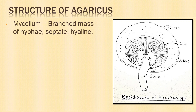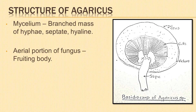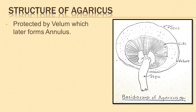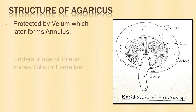The mycelium is a branched mass of hyphae forming a network on the substratum. The hyphae are septate and hyaline. The aerial portion of the fungus is the main fruiting body of the plant. Agaricus is characterized by having a fleshy stalk known as stipe and an umbrella-like structure born on its top known as the pileus. When young, the fructification is enveloped by a thin membranous protective covering called the vellum, which later forms a ring or annulus on the stalk.